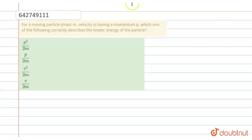Hello students, here is a question. For a moving particle, mass m and velocity v having a momentum p, which one of the following correctly describes the kinetic energy of the particle?